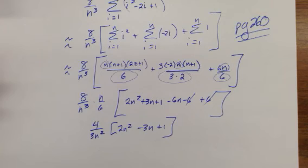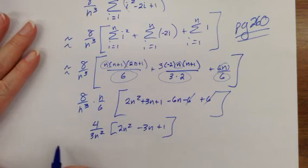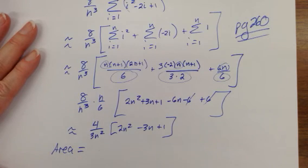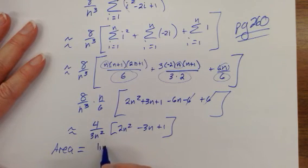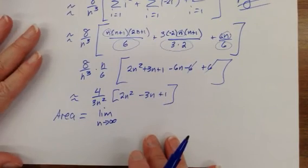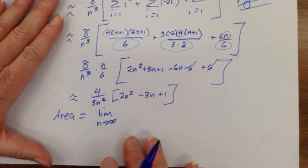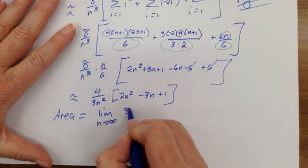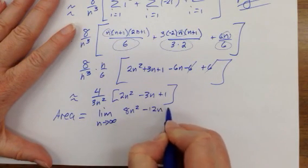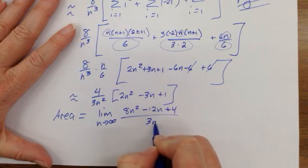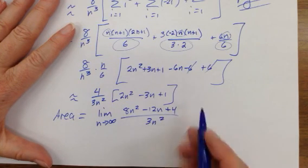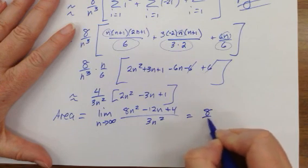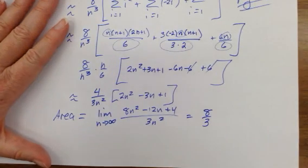That is the formula for n subintervals. Now, here is where this gets crazy. That is approximate area. Actual area. Take the limit. As n goes to infinity. Fill this up with n rectangles. Let n go off to infinity. You have an infinite number of rectangles. If I distribute that for... We apply L'Hopital. This is infinite over infinite. Apply L'Hopital twice. 8 thirds. Actual area. There it is.